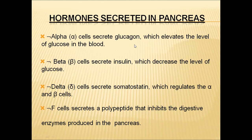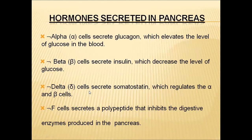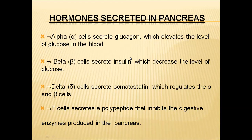Glucagon helps increase blood glucose levels when they are below the normal range. When blood glucose is below normal, glucagon is released to raise it. When blood glucose levels are above normal, insulin is released to lower the elevated glucose levels. Delta cells secrete somatostatin, which regulates alpha and beta cells and ultimately helps maintain blood glucose levels. F cells in the pancreas secrete a polypeptide hormone that inhibits secretion of digestive enzymes, which is related to digestion, not blood glucose regulation.